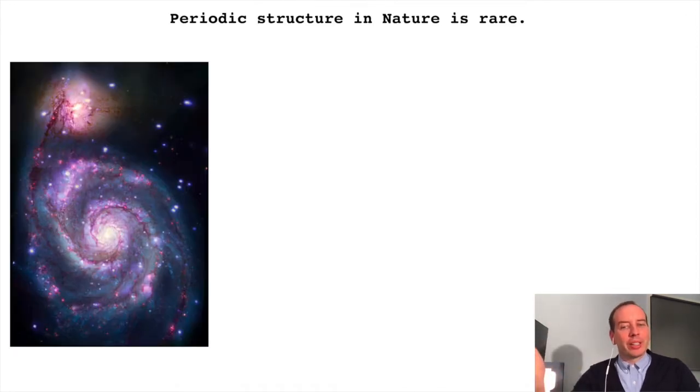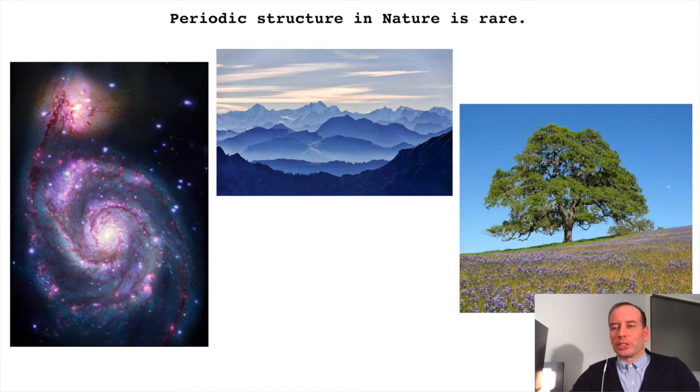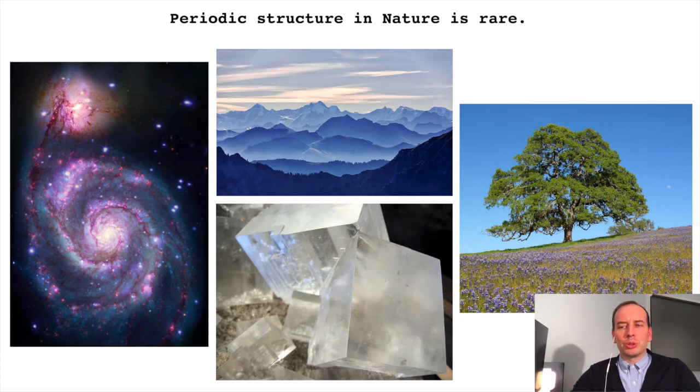Periodic structure in nature is rare. If we consider all the length scales of our universe, at the largest length scales, the arrangement of stars and galaxies have no long-range coherence, and we don't see translational symmetry of a periodic structure. On the length scale of kilometers, mountains and clouds have characteristic dimensions in their structure, but no periodicity. Trees and grass have seemingly random structures, but some minerals do show visible signs that nature might host a structure with discrete translational symmetry.